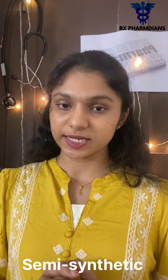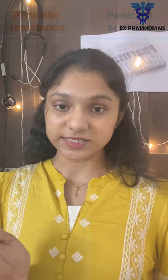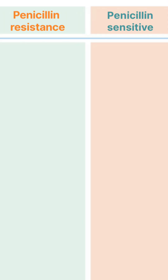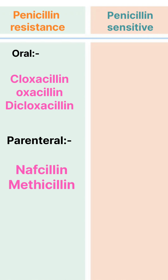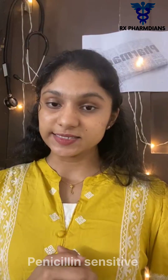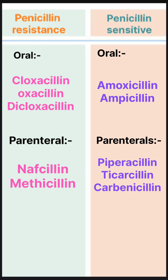Next, semisynthetic penicillin. Semisynthetic penicillin is divided into two: penicillinase-resistant and penicillin-sensitive. Penicillinase-resistant is again divided into oral and parenteral. Under oral: cloxacillin, oxacillin, dicloxacillin. Under parenteral: nafcillin, methicillin. Penicillin-sensitive is divided into oral and parenteral. Under oral: amoxicillin, ampicillin. Under parenteral: ticarcillin, piperacillin.